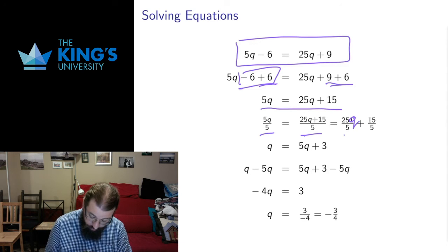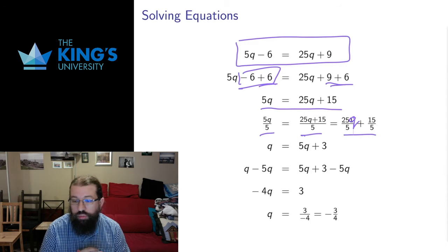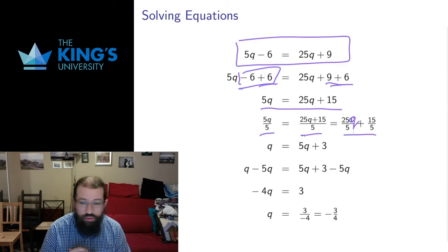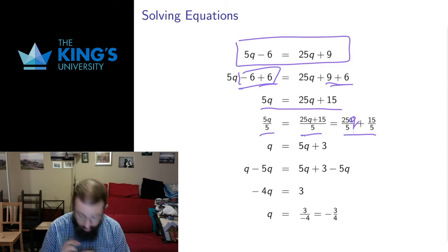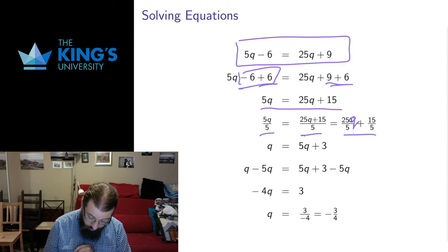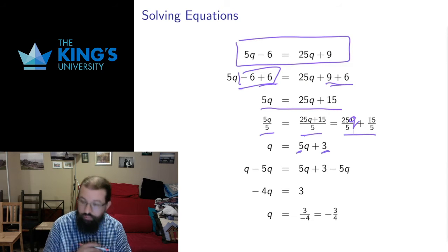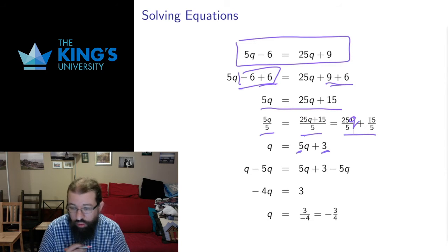Then I can split this up. We talked about this in one of the modules previously, that we can split up numerators of fractions - it's essentially the distributive law. The first fraction, 25q over 5, 25 over 5 is 5. And 15 over 5 is 3. So I split this up and I get 5q plus 3.